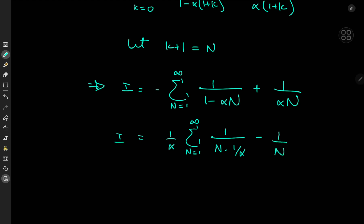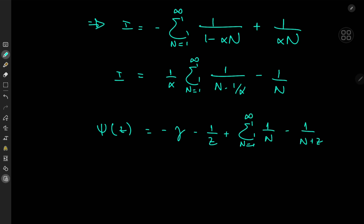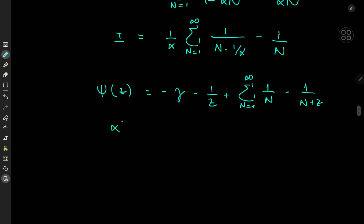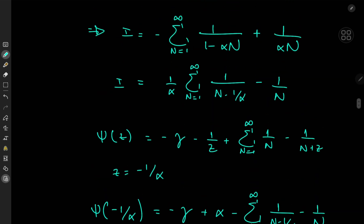Now it's time to reference the digamma function, which has the useful series expansion: digamma(z) = -gamma_EM - 1/z + sum over n from 1 to infinity of (1/n - 1/(n + z)), where gamma_EM is the Euler-Mascheroni constant. We need terms of the form 1/n - 1/(n - 1/alpha), so we set z = -1/alpha, giving digamma(-1/alpha) = -gamma_EM + alpha + sum over n from 1 to infinity of (1/n - 1/(n - 1/alpha)), which is exactly what we were looking for.